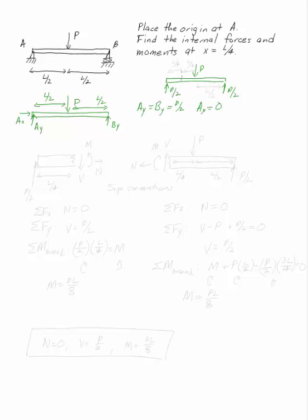I want to know what's happening right here at x equals L over 4. So I have two L over 4's and one L over 2. That's my free body diagram now.